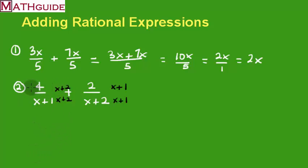What does that mean? I'm going to multiply these numerators together. So 4 times this quantity is going to be 4x plus 8, all over our common denominator x plus 1 times x plus 2. That's our first fraction.